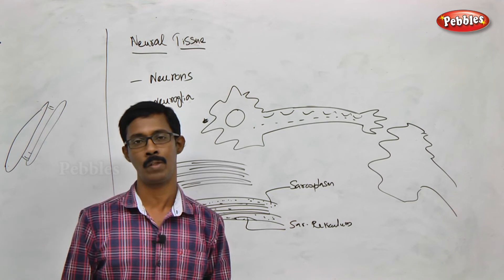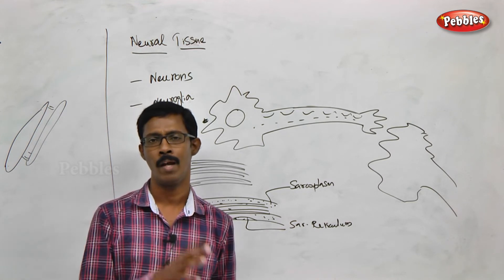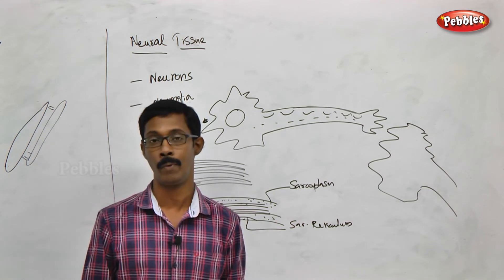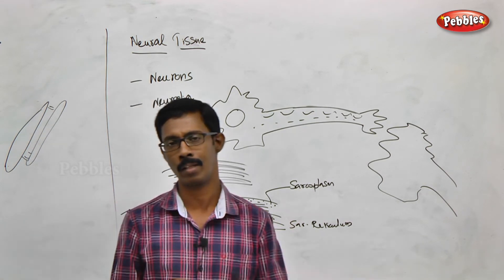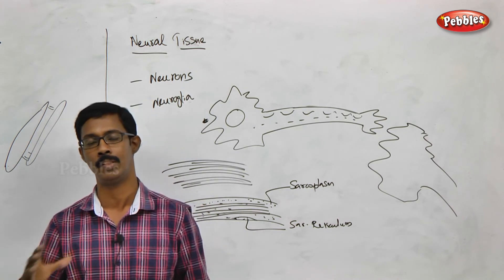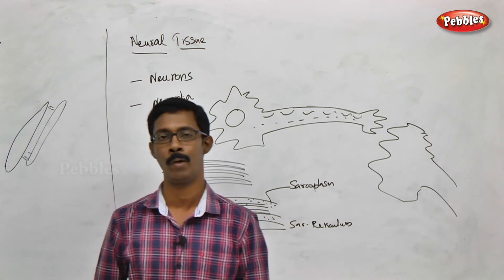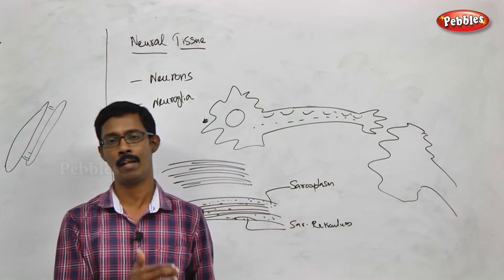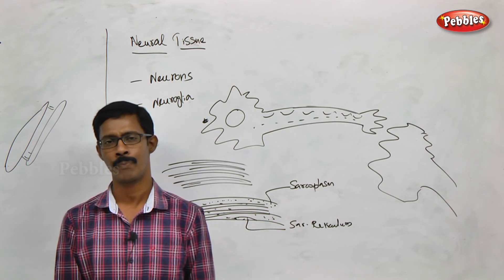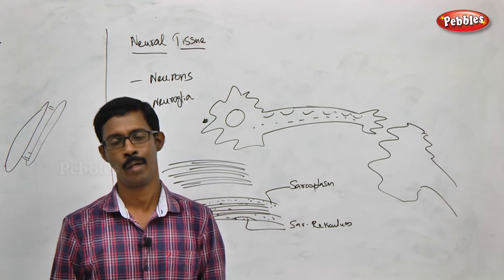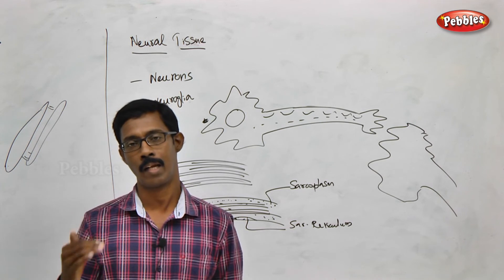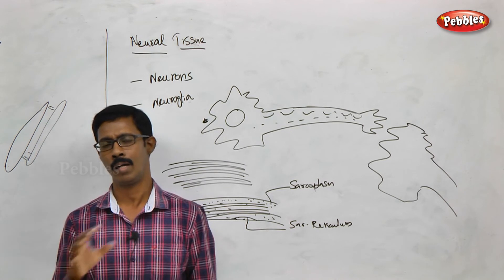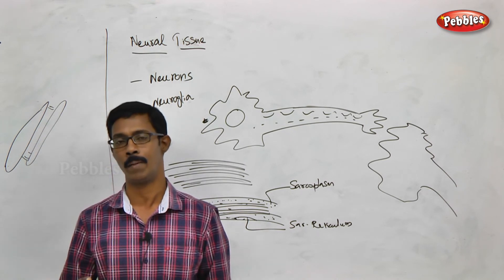In the entire chapter on animal tissues, we discussed how the animal body is made up of tissues. There are four types: epithelial, connective, muscular, and neural tissue. We discussed their subtypes and roles. The details of each tissue will be covered in respective chapters such as locomotion and circulatory system.